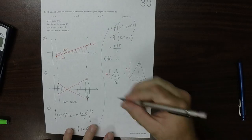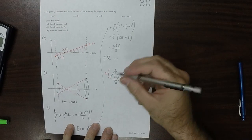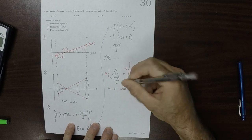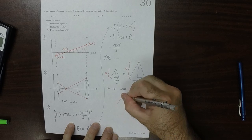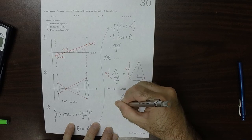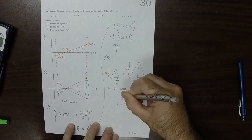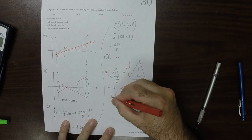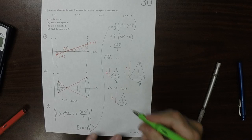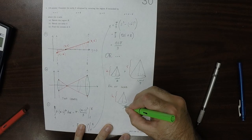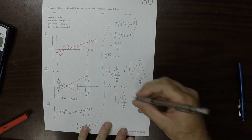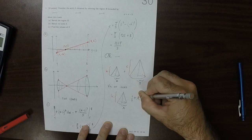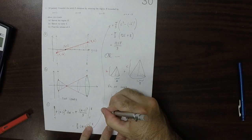And we established in lecture that the volume of a cone that has these measurements, where this is the height h and this is the radius r, the volume of a cone is 1 third pi r squared h. So we could find the volumes of those individually.